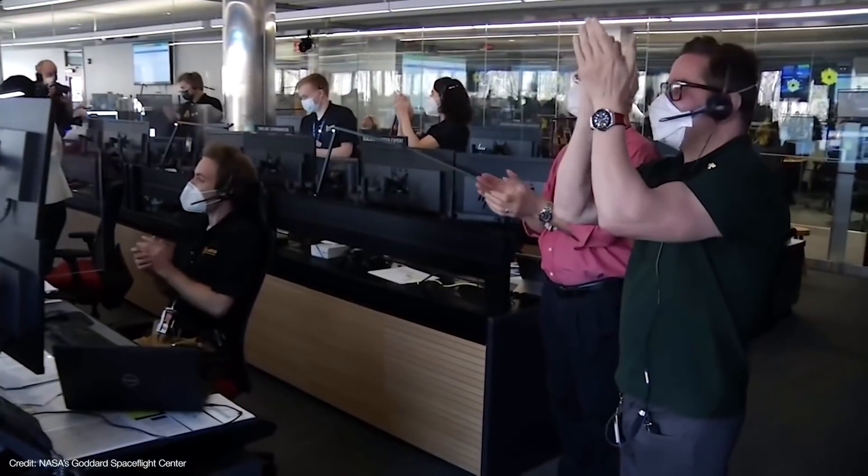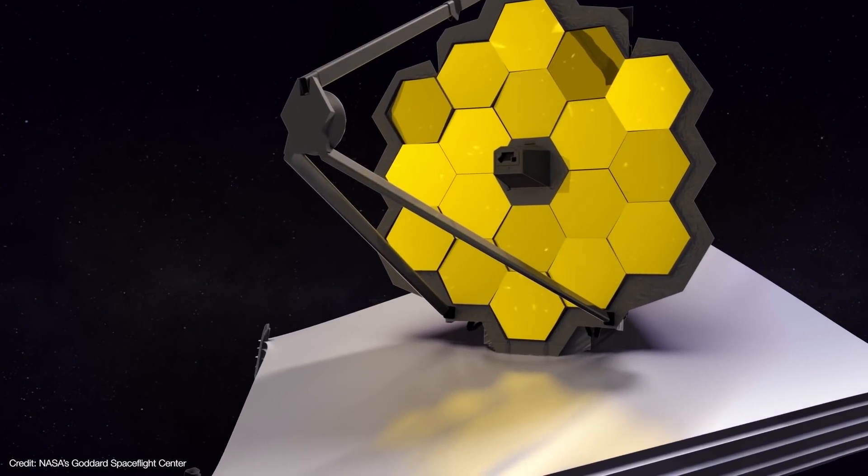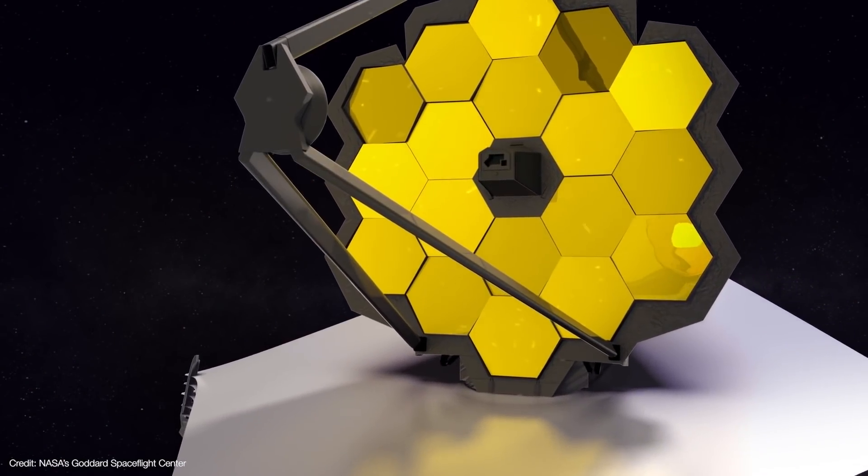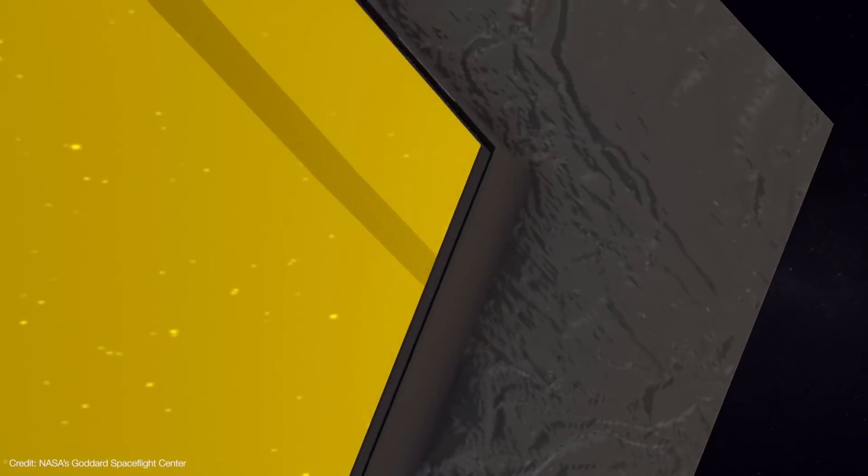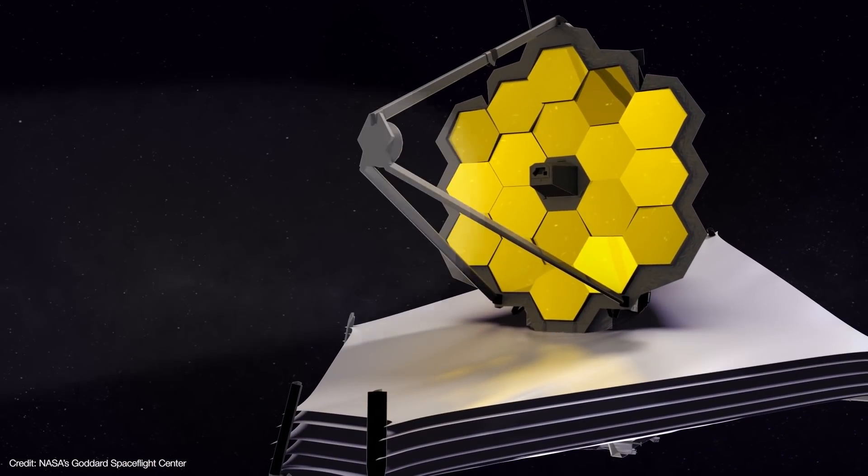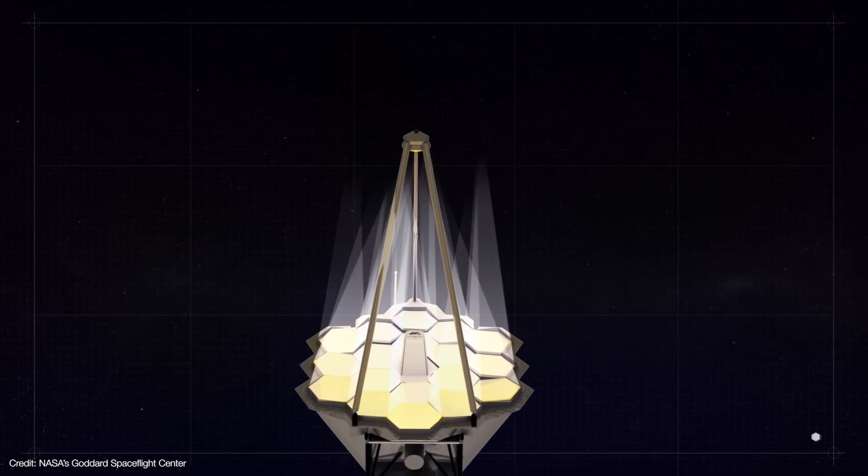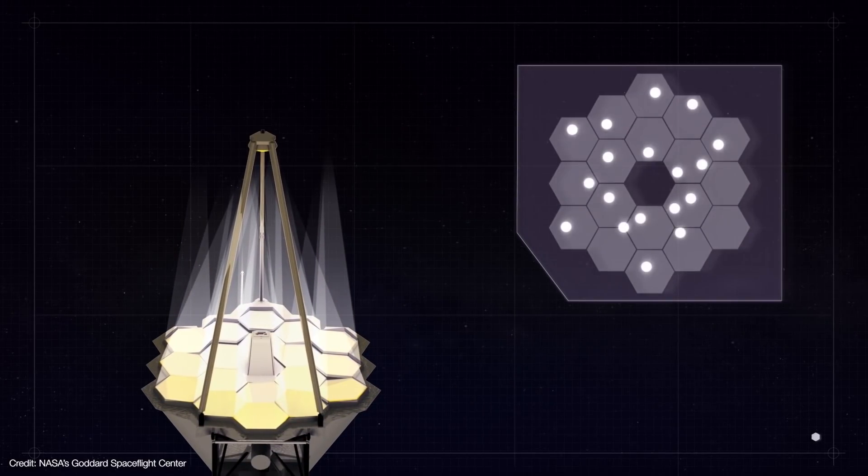Even though the deployments were the riskiest part of Webb's commissioning, getting the optical system to work is equally critical. All 18 of Webb's hexagonal mirror segments must be aligned to within 10 nanometers of each other to form a single primary mirror, and that requires making ultra-fine adjustments as small as one ten-thousandth the width of a human hair.